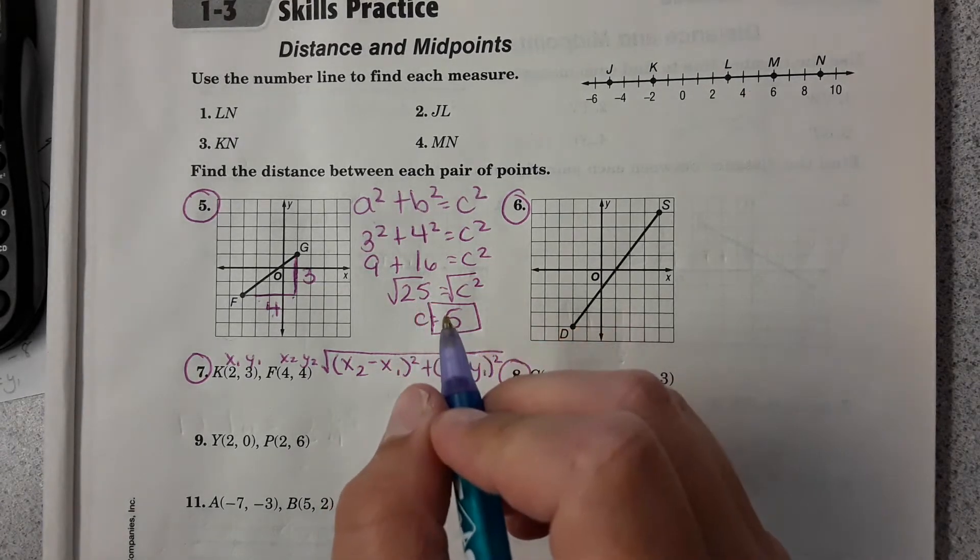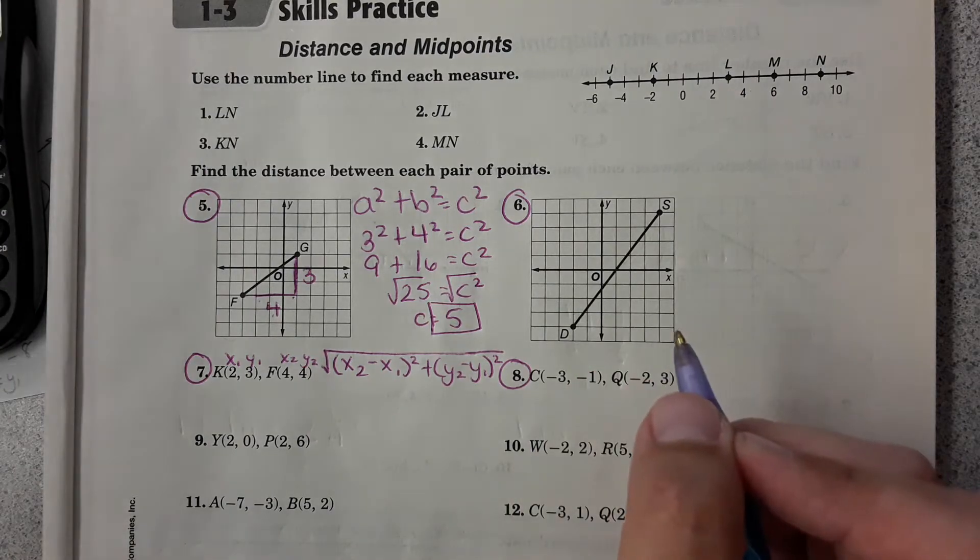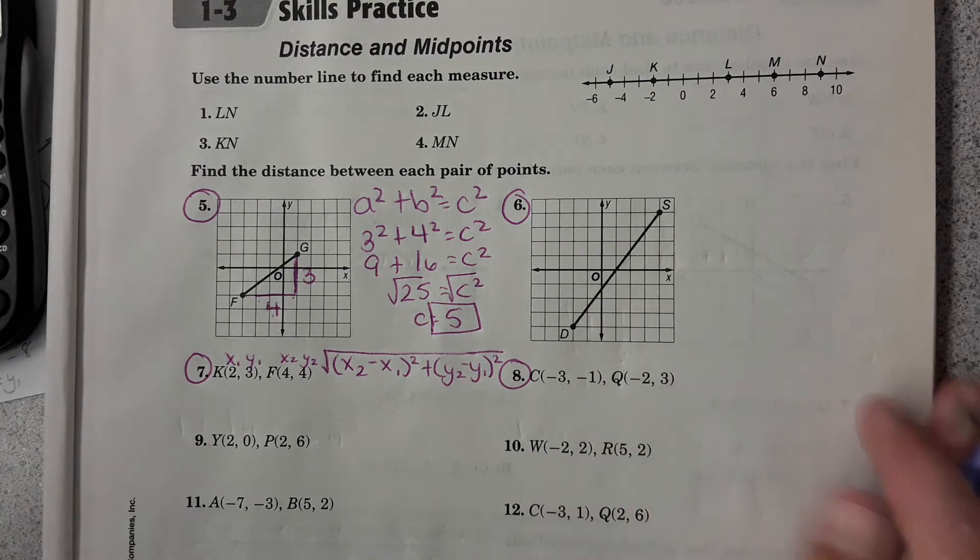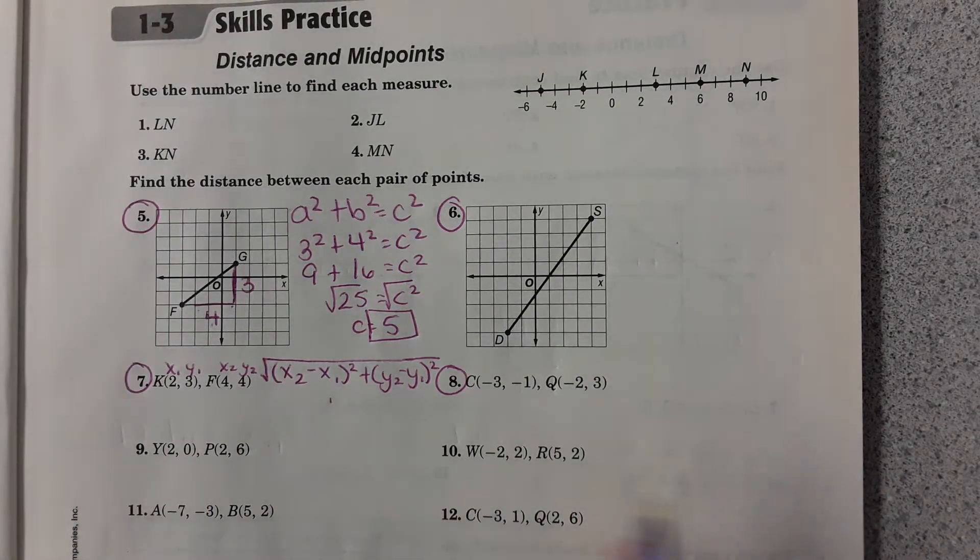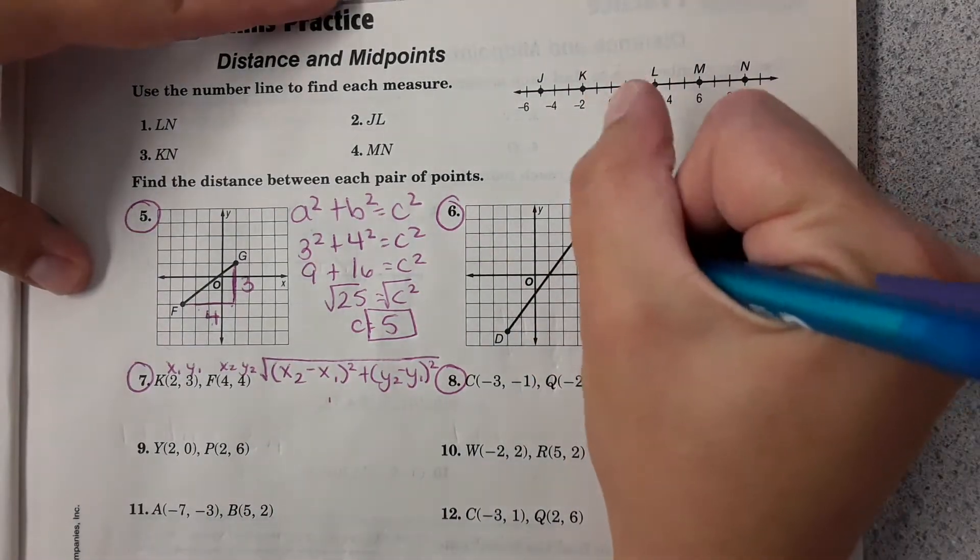What number are you guys on? You're on 7? Okay. Then I will continue going through 6, and then I'll start 7 for anybody that's stuck there. So, 6.